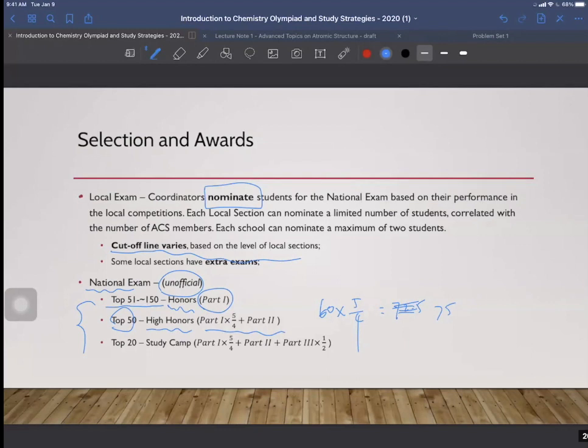And then Part 2, the original score is 100 points. So basically, for those students, these two parts will be considered, and their ranking is based on this formula. So as you can see, Part 2 is slightly more important than Part 1, right?